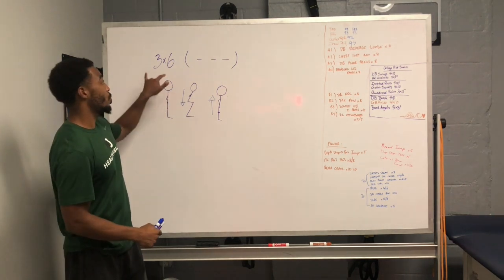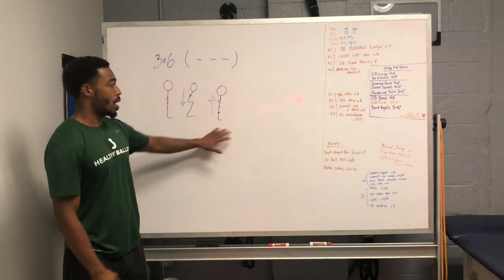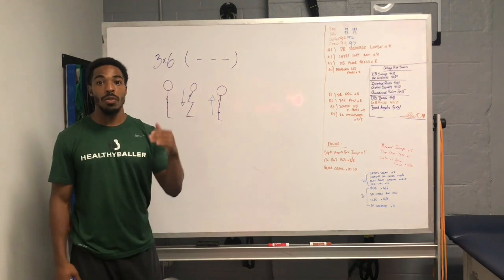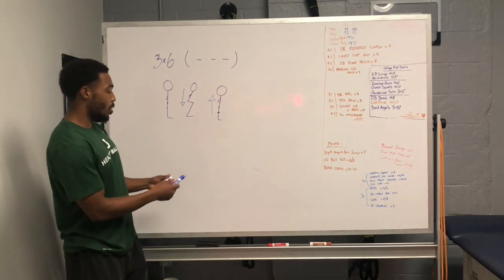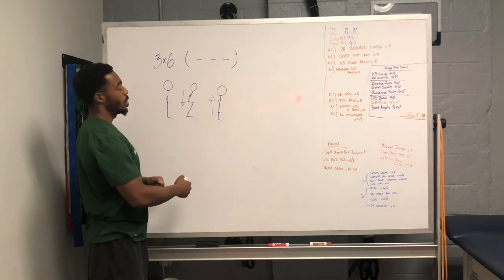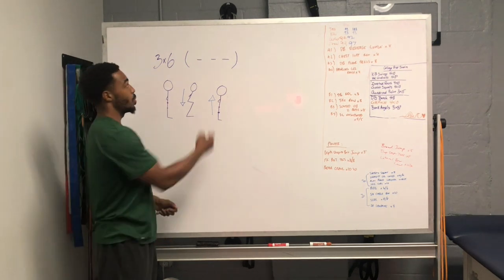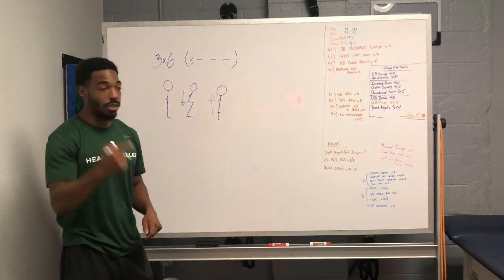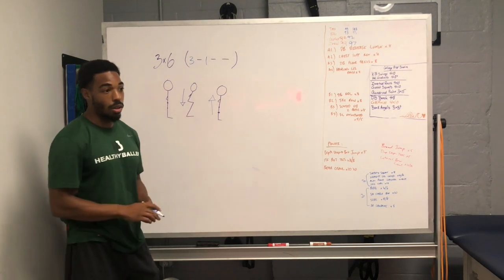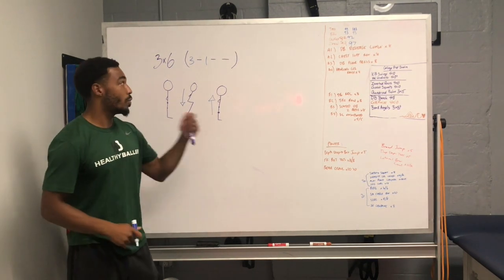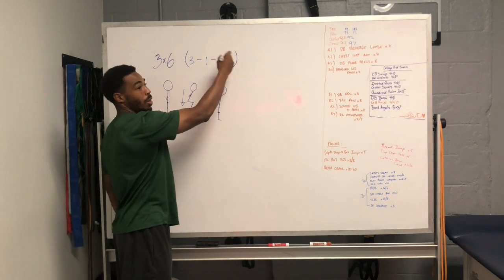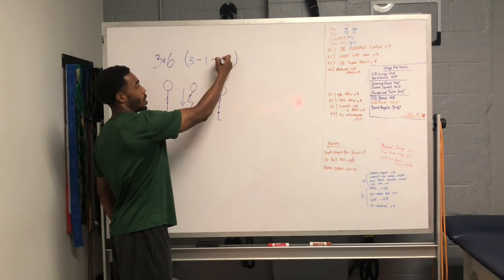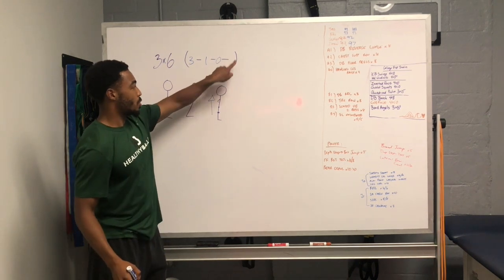Here's how this gets broken down in terms of writing it out program-wise. Let's say you're programming a goblet squat and you want an athlete to do three sets of six. The first number you write is always the eccentric — say three seconds on the way down, you write three. The second number is the isometric — say you want them to pause at the bottom for one second. The third number is the concentric — if you want them to just explode up, you can write zero or X to denote that it's not a focus. So for this example, we'll put zero.